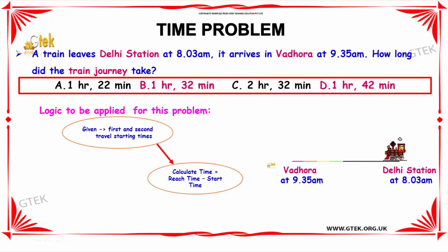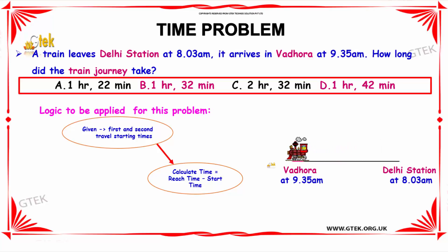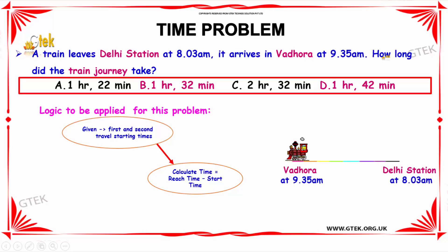The next problem is: a train leaves Delhi station at 8:03 AM and arrives at Vadodara station at 9:35 AM. So the question is, how long did the train journey take?